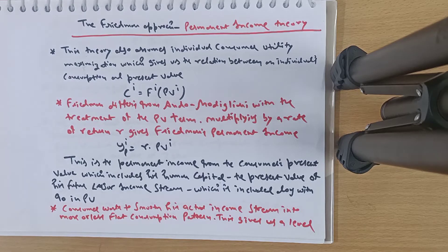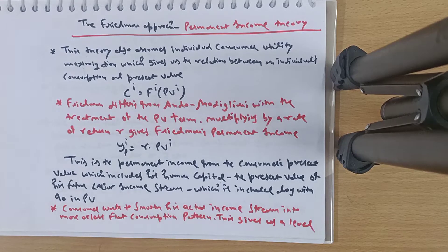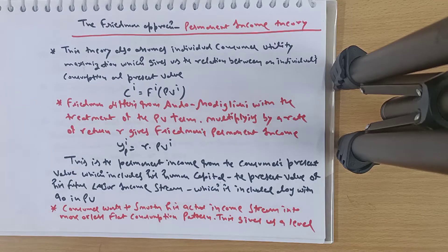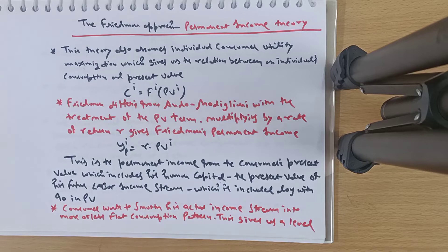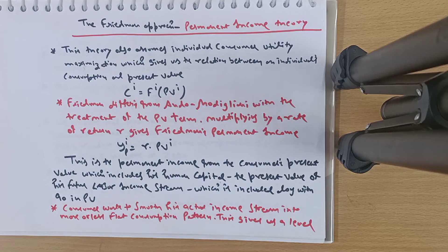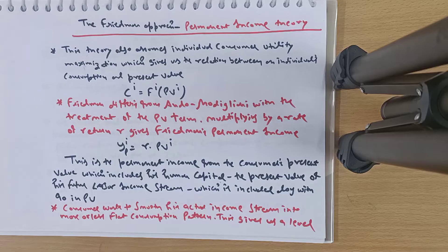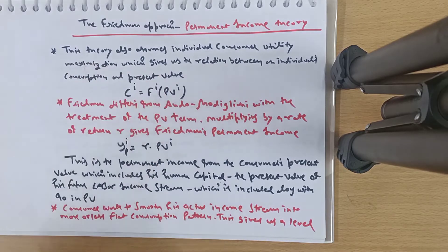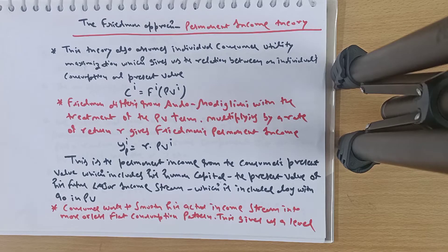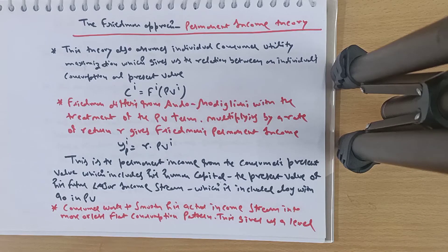Let us start this theory. This theory assumes individual consumer utility maximization, which gives us the relation between an individual's consumption and present value. As you remember from previous models, your consumption depends upon your present value of income. Friedman differs from Ando-Modigliani, that is the Life Cycle Theory.